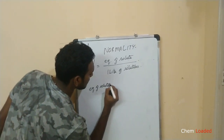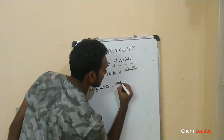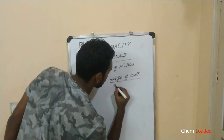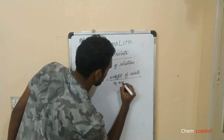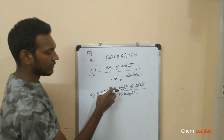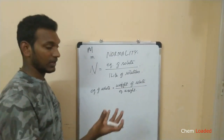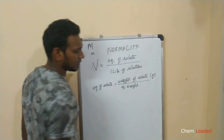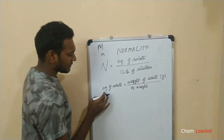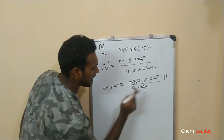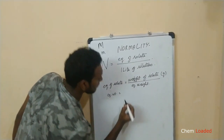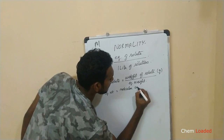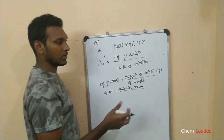The equivalent of solute is equal to the weight of solute divided by the equivalent weight. The weight of solute is the number of grams of solute — for example, 50 grams, 12 grams, or 0.2 grams. The equivalent weight is equal to the molecular weight of the solute divided by the number of valence.